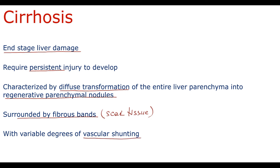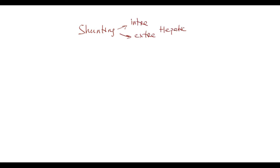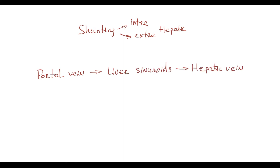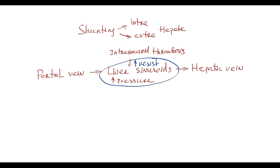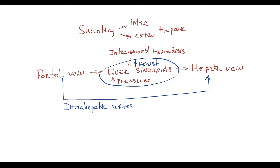Vascular shunting occurs as a result of increased pressure in some vascular region. Shunting can be intra- and extrahepatic. In normal conditions, blood from the portal vein moves to liver sinusoids and then to the hepatic vein. But if intrasinusoidal thrombosis occurs, intrahepatic pressure increases and blood tends to move by the lowest resistance pathway, bypassing highly resistant sinusoids. Blood finds the possibility to move directly from the portal vein to the hepatic vein, which became possible with formation of an intrahepatic portosystemic venous shunt.